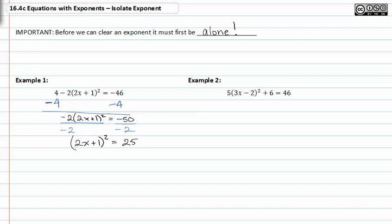Now remember, I can take the square root of both sides. When I take the square root of both sides, I have to allow for both my positive and negative solutions.